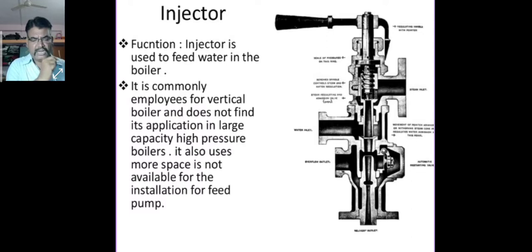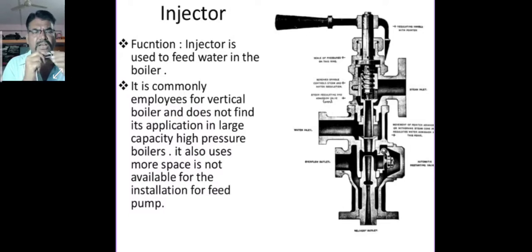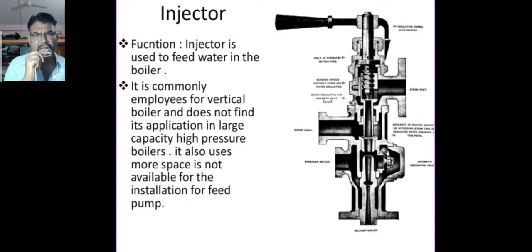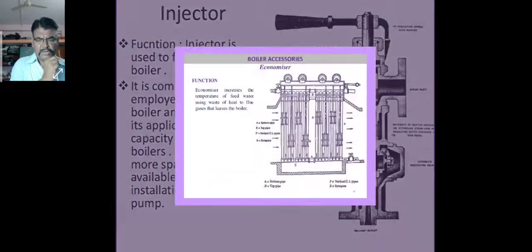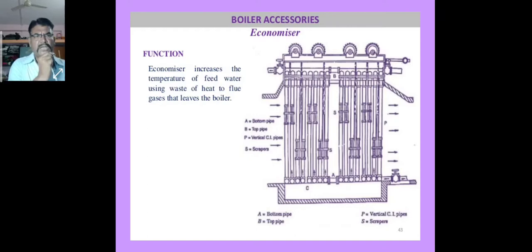The injector is used to feed water into the boiler. It is commonly employed for vertical boilers and does not find application in large capacity high pressure boilers. It is also used where space is not available for the installation of a feed pump.